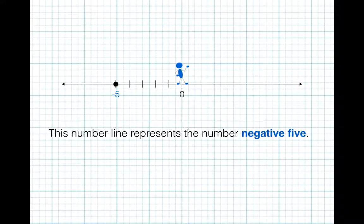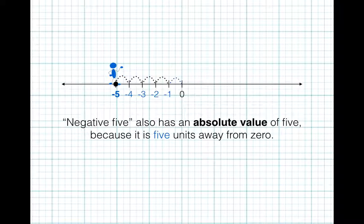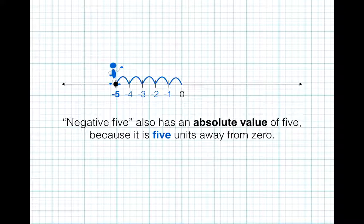This number line represents the number negative 5. Negative 5 also has an absolute value of 5 because it is 1, 2, 3, 4, 5 units away from 0.